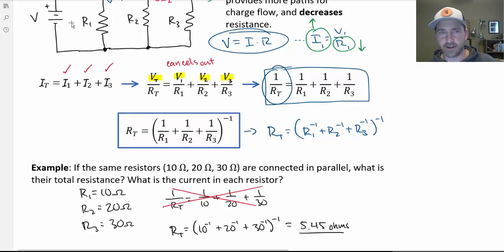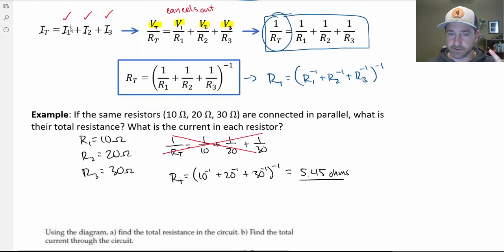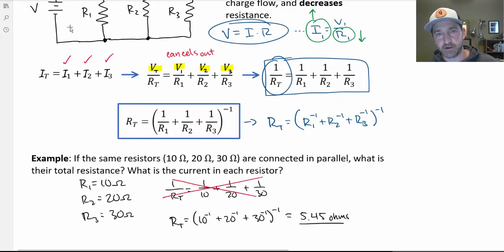But like I said, if you keep adding resistors in parallel, you keep increasing the charge flow of the battery. To the battery, it seems like there's less resistance. There's more doorways open that it can push charge flow through.